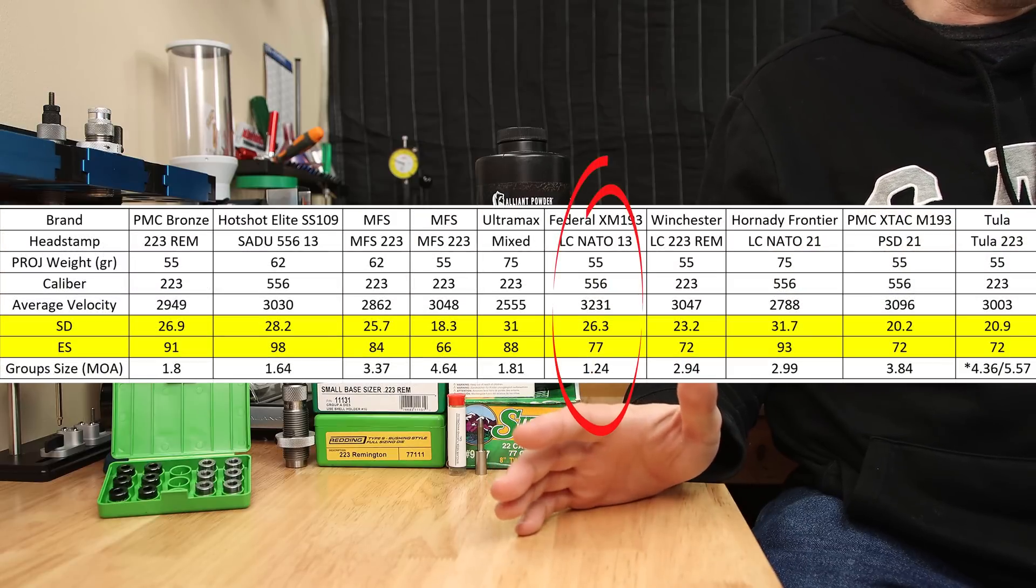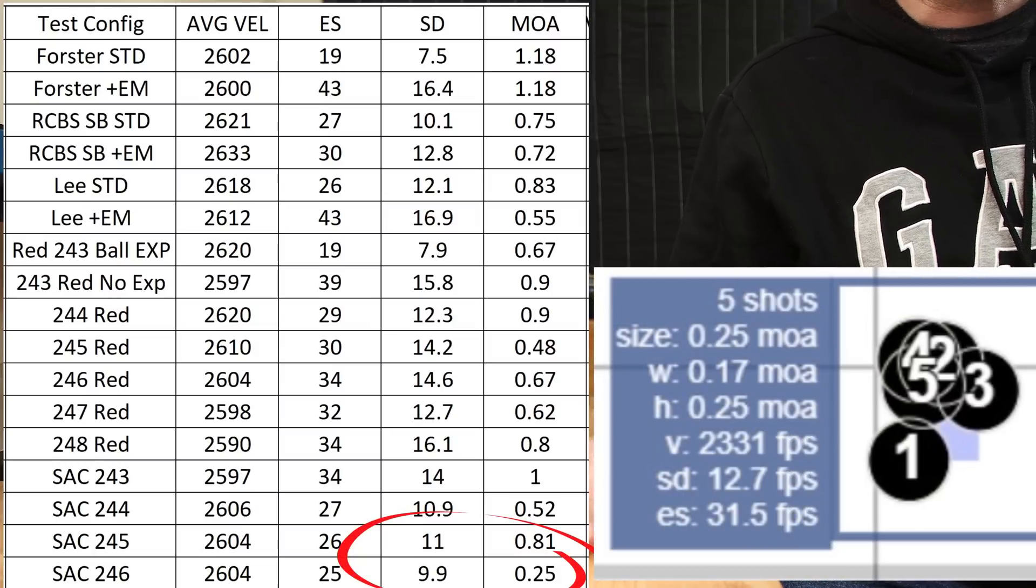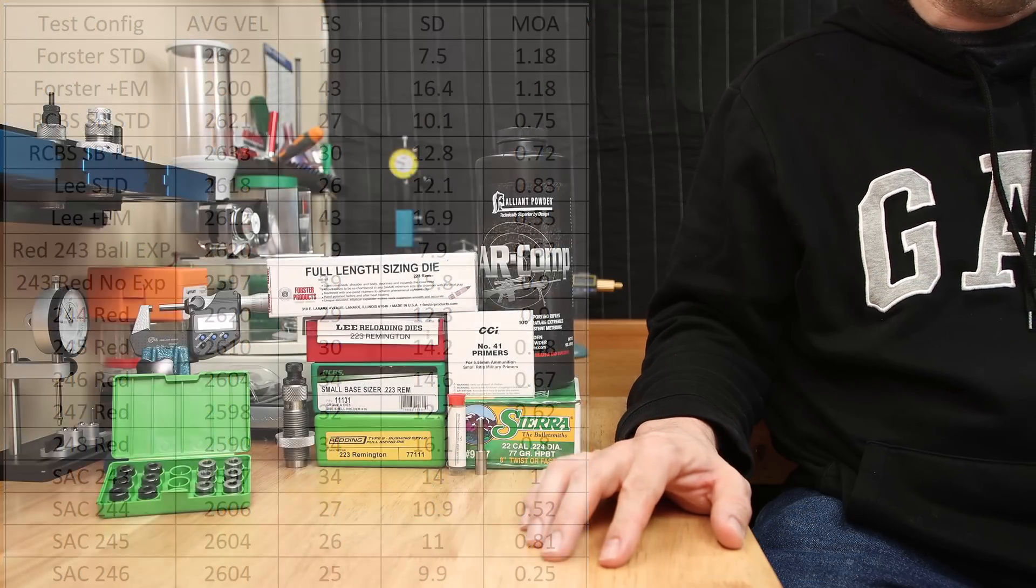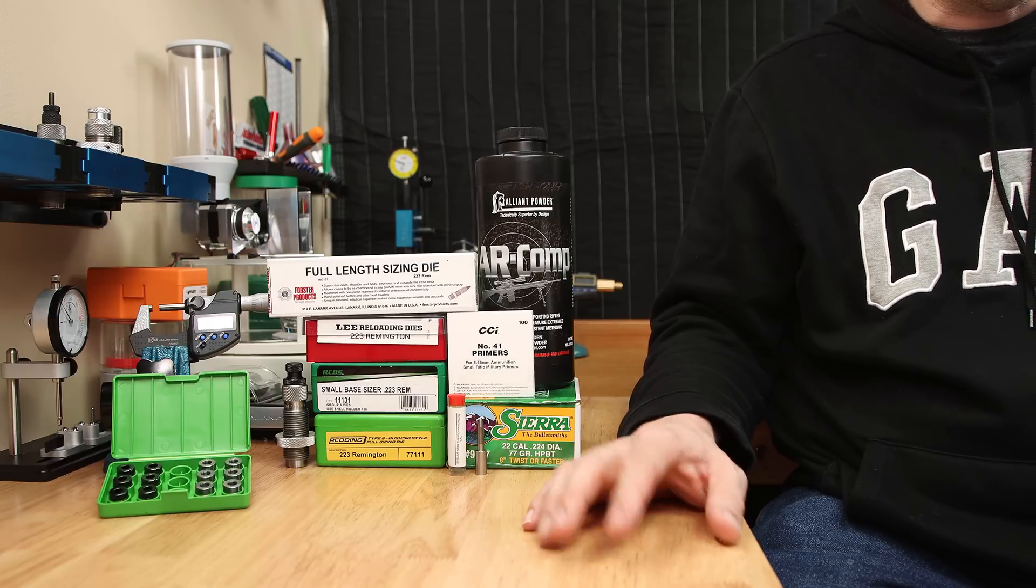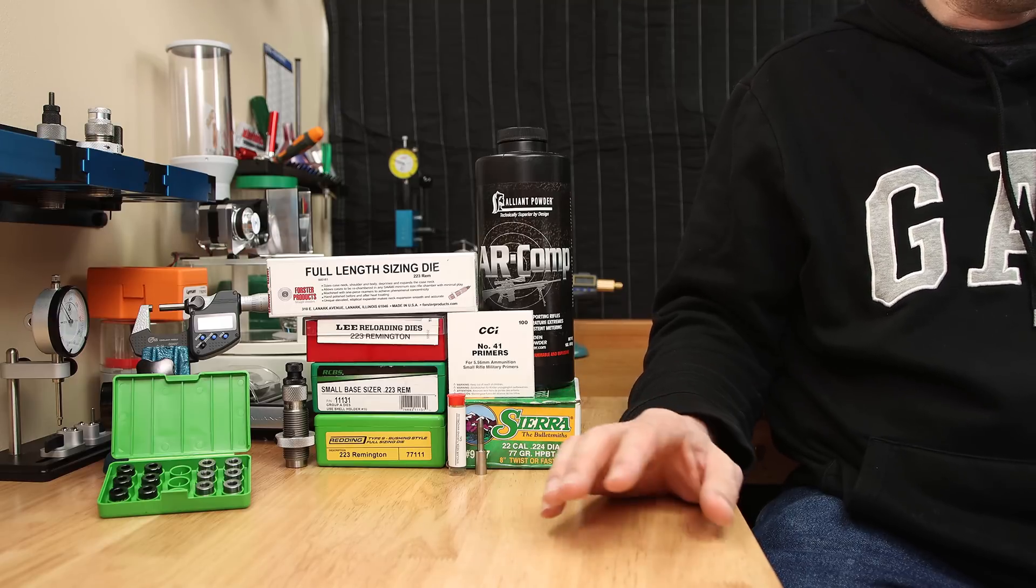But again, the sample size isn't really fair. Our best group for the day was with the Redding S die with the Short Action Customs 246 bushing at .25 MOA, which was by far not just the best group for today, but the best I've ever achieved out of this platform to date. I still consider this load to be untuned, as we haven't done anything with Cartridge Overall Length testing. It's just loaded at 2.255 inches for easy magazine feeding.